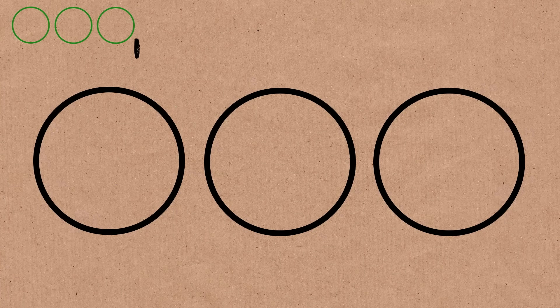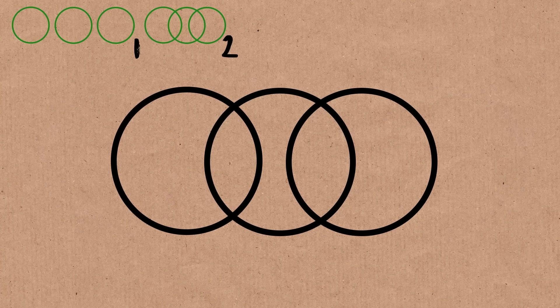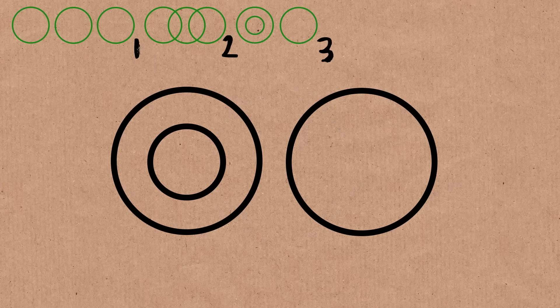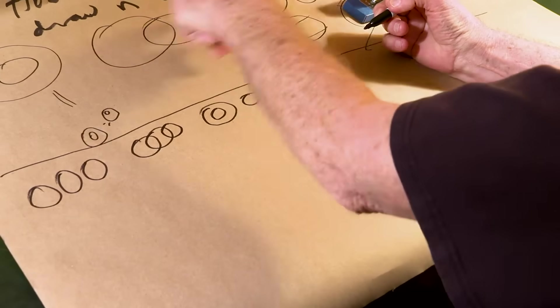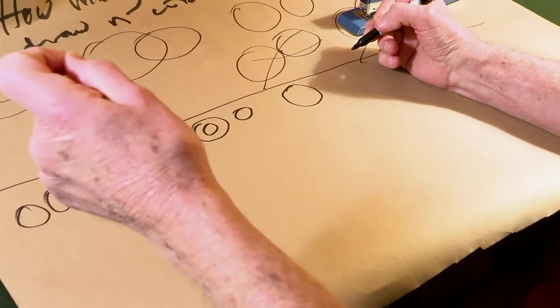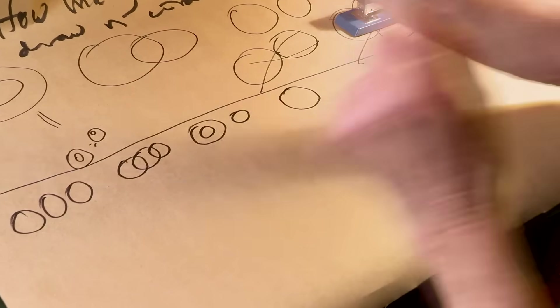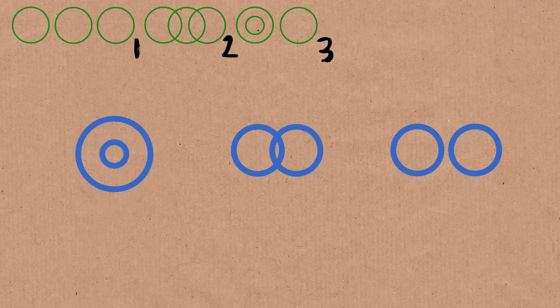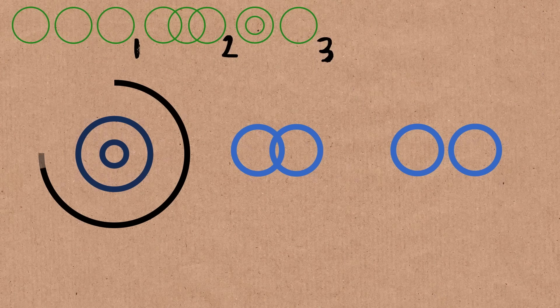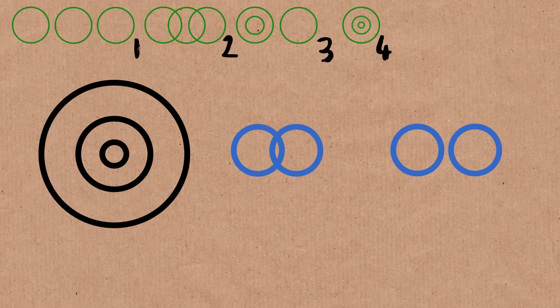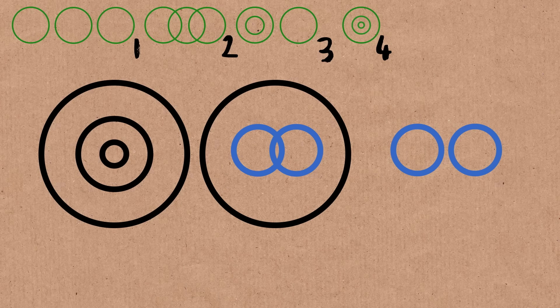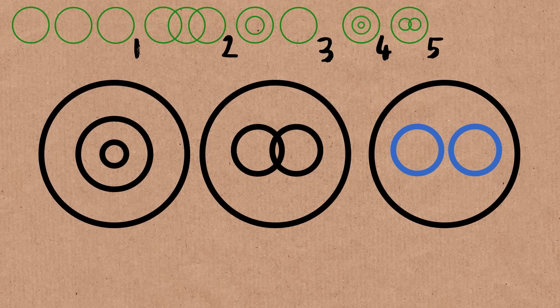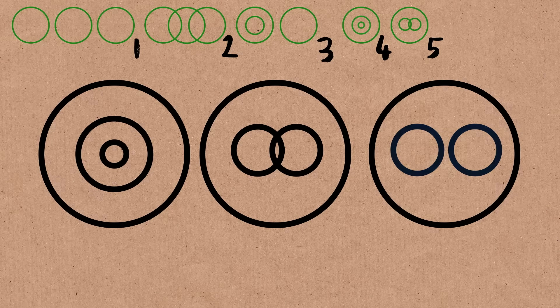Or we could do three that are linked. Or we could do a nested pair and a separate one. In fact, we could take any of the three that we had for two circles and wrap a circle around them. So we could do that one and put a circle around it. So we'd get that. Or I could take this one and put a circle around it, and we'd get that. Or I could take this one and put a circle around it, and we'd get that.